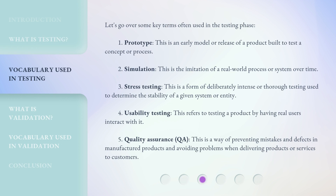Let's go over some key terms often used in the testing phase. 1. Prototype: This is an early model or release of a product built to test a concept or process. 2. Simulation: This is the imitation of a real-world process or system over time. 3. Stress testing: This is a form of deliberately intense or thorough testing used to determine the stability of a given system or entity.